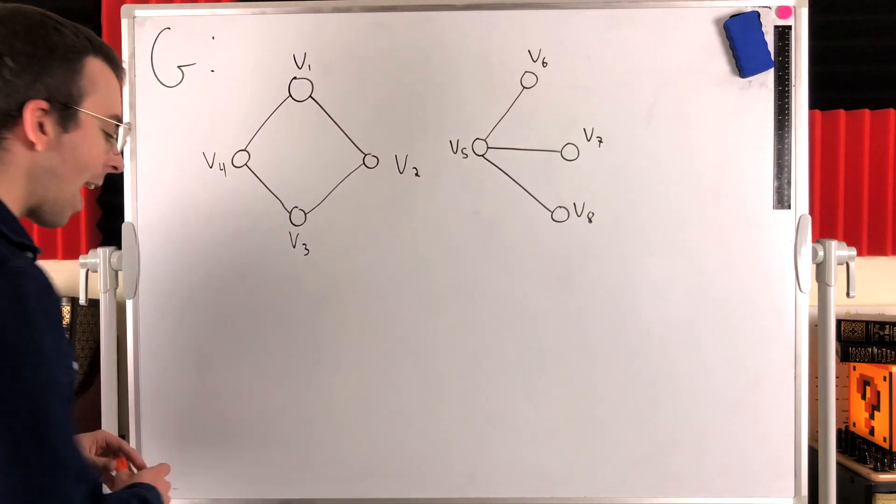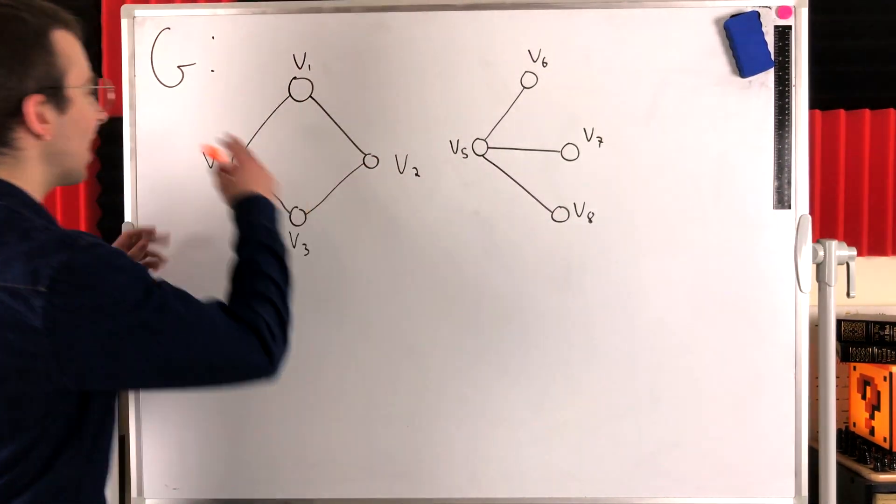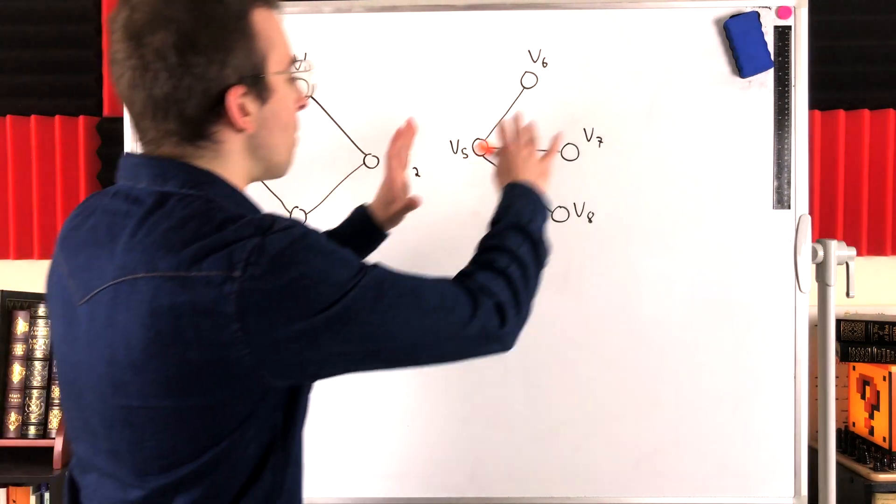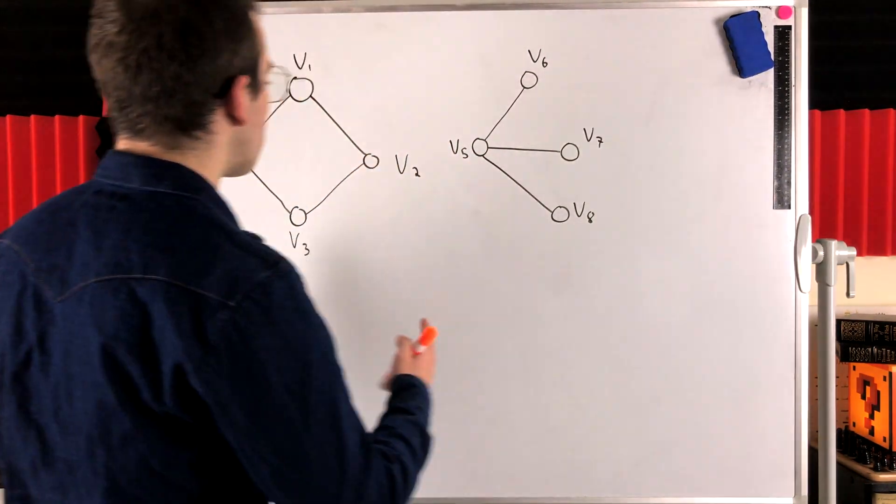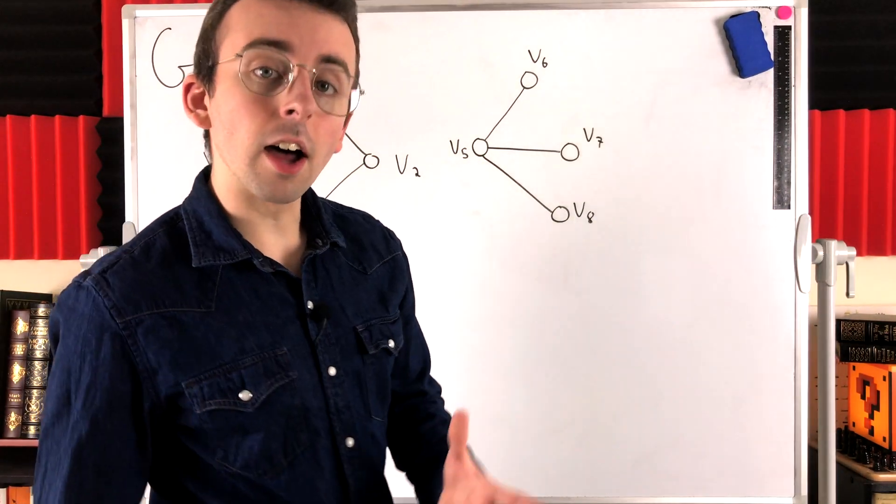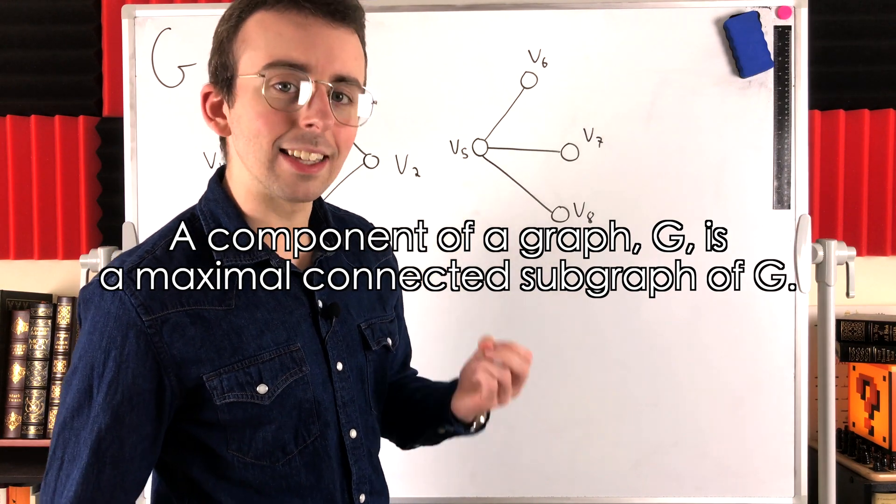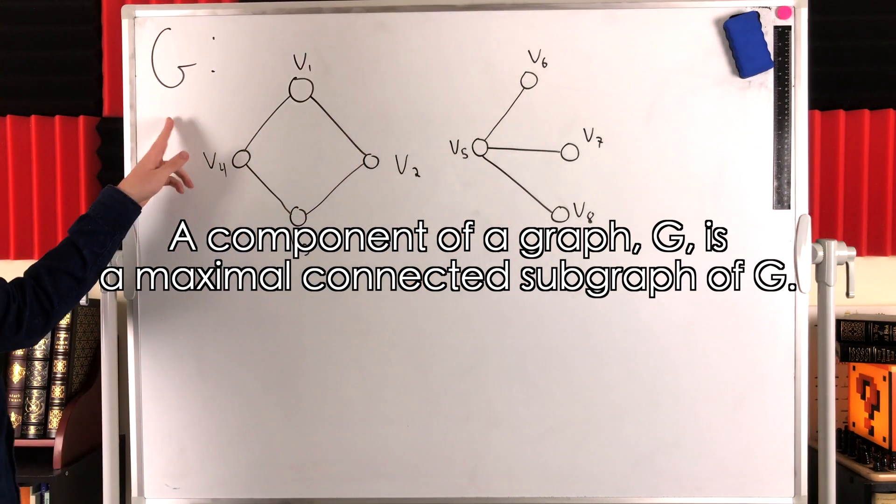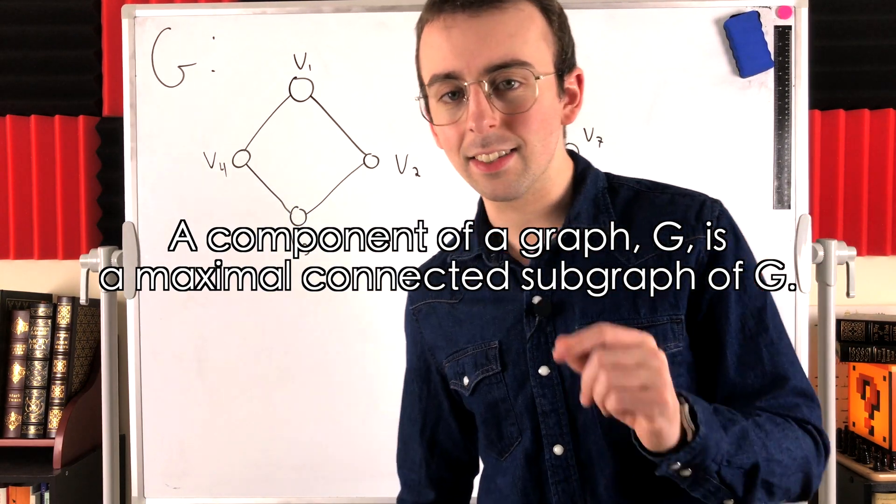Well, a connected graph has only one component, but disconnected graphs like this graph G have multiple components. So we define components in order to describe the connected pieces of a graph. A component is a maximal connected subgraph. I'll say that one more time. A component of G is a maximal connected subgraph.